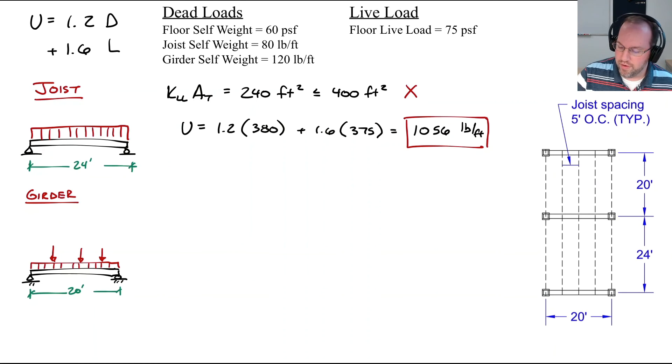Let's repeat this for the girder. In this case our influence area was 880 square feet, which is in fact greater than 400 square feet, so we get to use a live load reduction factor. Our factor is going to be 0.25 plus 15 divided by the square root of 880 square feet, and that's approximately 0.756.